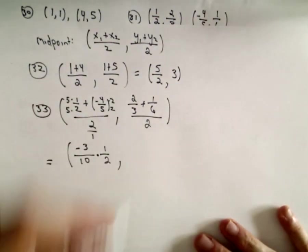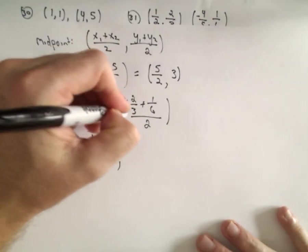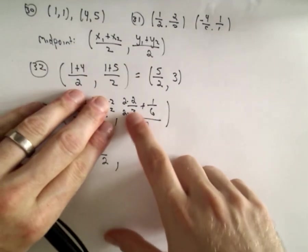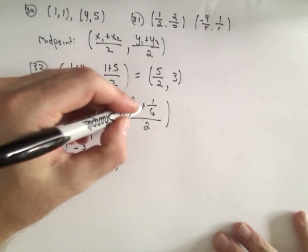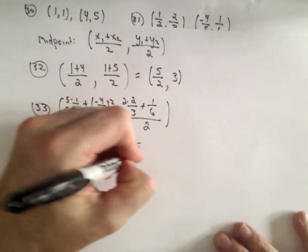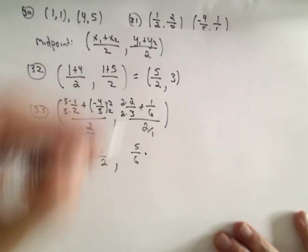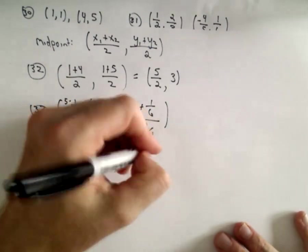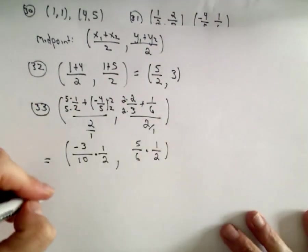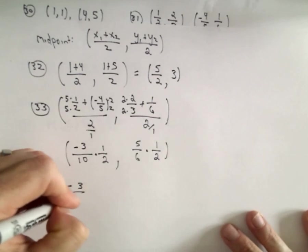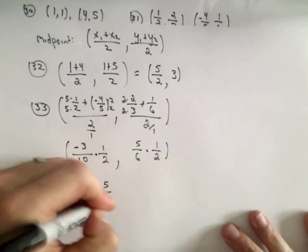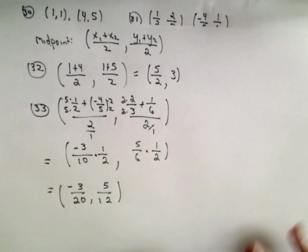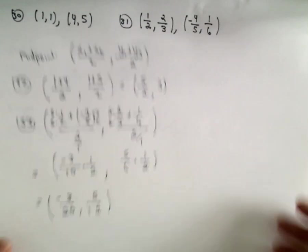So that's the first point. For the second one, we could multiply 2 thirds by 2 over 2. That'll give us 4 sixths plus 1 sixth. That'll be 5 over 6. Again, 2 over 1, since we're dividing by 2 over 1, we can flip and multiply by 1 half. So that's going to give us negative 3 over 20, comma, 5 over 12 as the midpoint. Okay, so just a little review with fractions there.